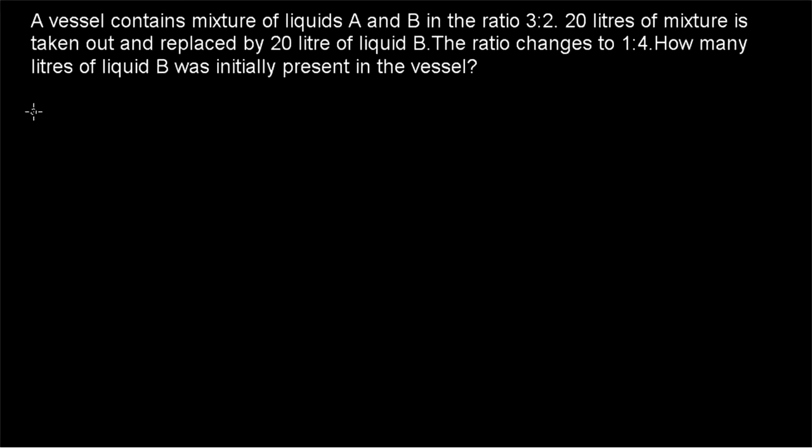Hi friends, welcome to today's class. Today's question is: a vessel contains a mixture of liquids A and B in the ratio 3 is to 2. 20 liters of mixture is taken out and replaced by 20 liters of liquid B. The ratio changes to 1 is to 4. How many liters of liquid B was initially present in the vessel?